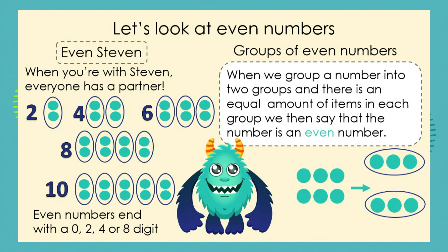So let's have a look at even numbers. Even Stephen says when you're with Stephen, everyone has a partner. So this means that there are two of something. If we have a look at the numbers over here, we can see that each number has a partner — fours have a partner, six have a partner, eight have a partner, and ten have a partner.